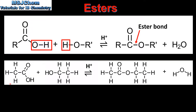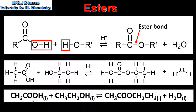In this reaction we have a carboxylic acid which is ethanoic acid reacting with an alcohol which is ethanol. The products of the reaction are an ester which is called ethyl ethanoate and a molecule of water. The equation for the reaction is shown below.